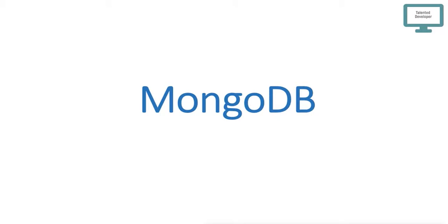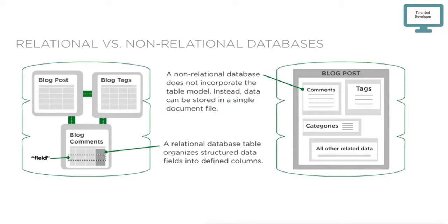First of all, what is the difference between SQL and NoSQL? SQL means relational. For example, here we have three tables: blog, post, tag, and comment. All tables have some data, but all data must be linked with some relation — in the sense of primary key and foreign key. If you want to fetch data from blog comments, you need to do some inner join or outer join. But in a NoSQL database, it will always contain data in a single document file — no need to do any inner join query.